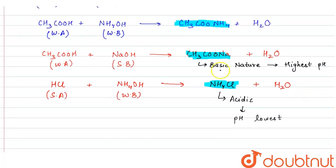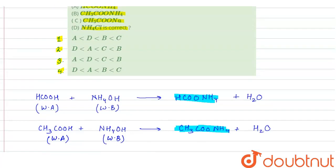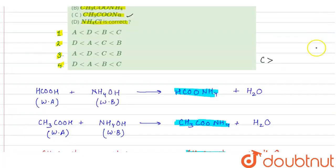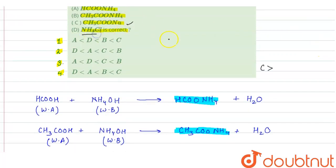Here the highest pH will be of CH3COONa which is given at C. The pH of C will be highest because it is basic in nature. And pH of D which is NH4Cl, it will be least, because here D is acidic in nature.